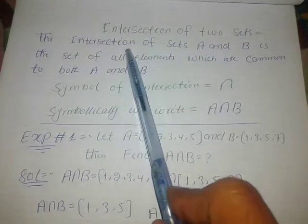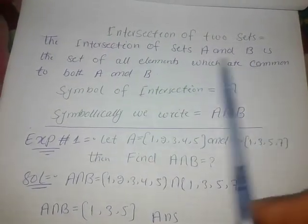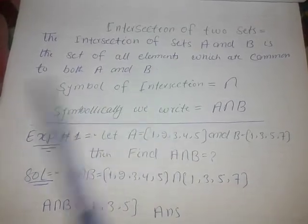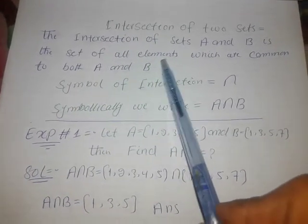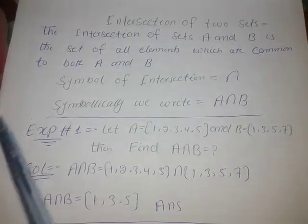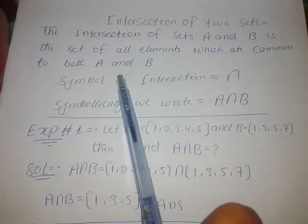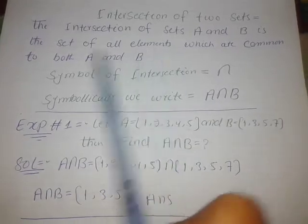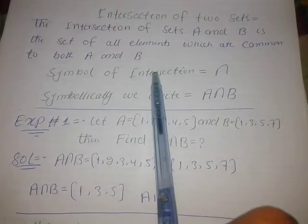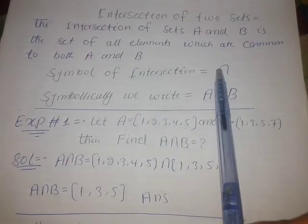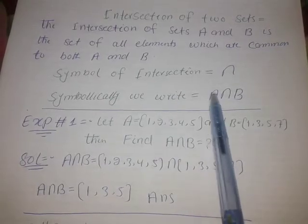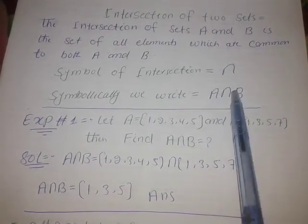The intersection of A and B consists of the elements which are common to both A and B. The intersection contains only those elements shared by both sets. Symbolically, the intersection symbol is used — we write A intersection B.